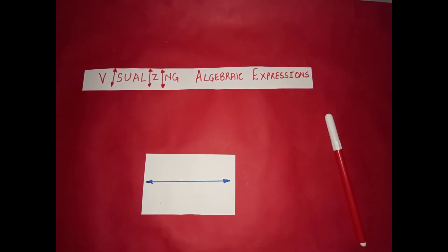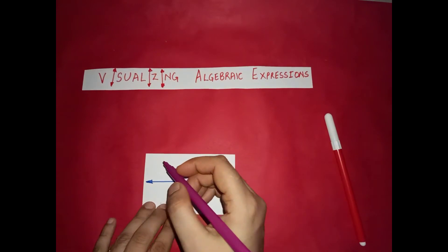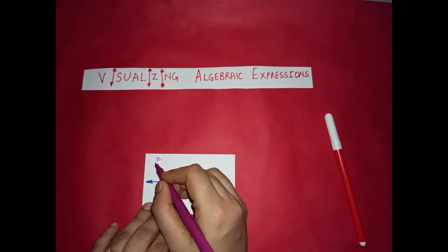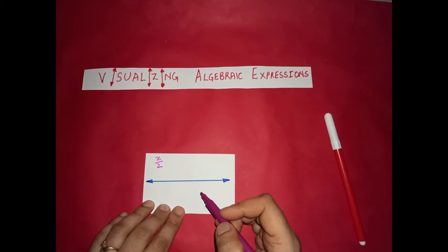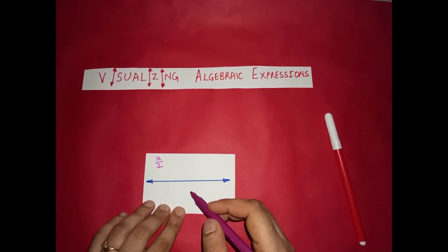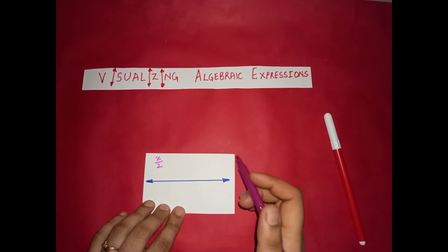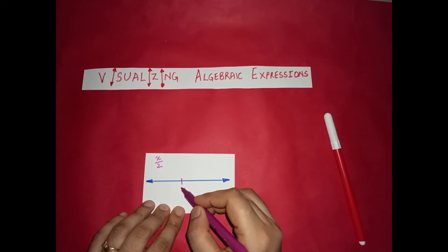Now let us represent another expression which is x over 2. x over 2 means half of x and it is positive. That means we have to move in the right side of 0. So if this is 0.